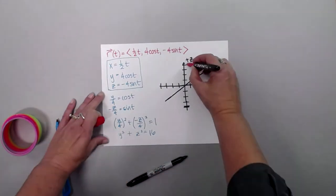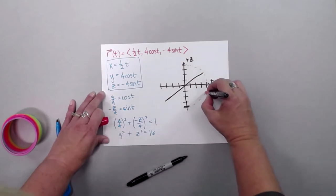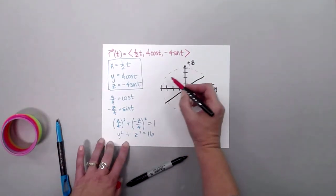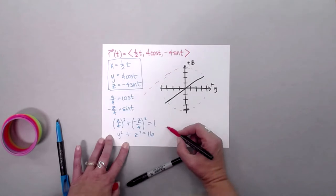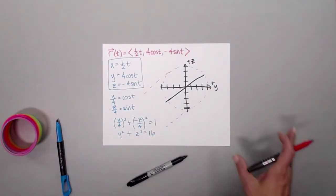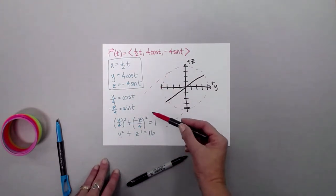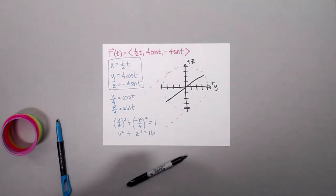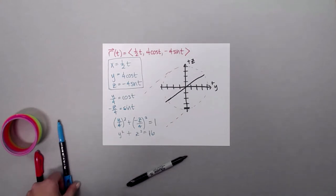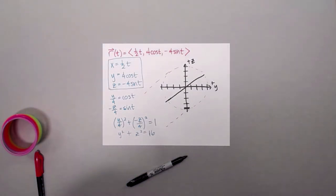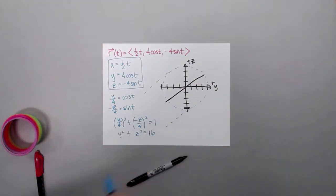I'll sketch the cylinder with a dashed generating circle in the yz-plane and extensions along the x-axis, and another copy of the generating curve further out. Remember, the cylinder is not what we're after — we're after the curve that lies on it. At this point, it's helpful to plot a few key t values. The better you get at this, the more you can just think about it in your head. Since this isn't the first example we've done, I'll go ahead and work through the points.